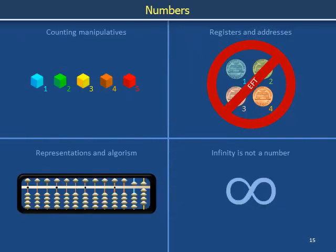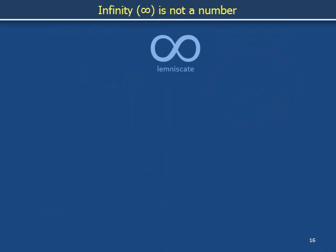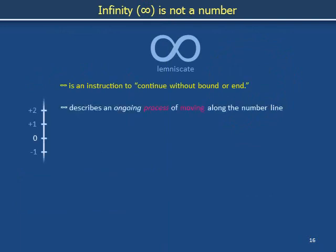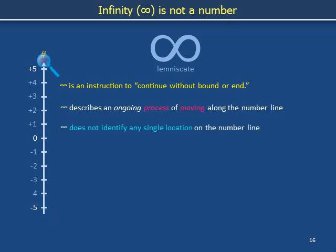We need to finish our review of numbers by reminding ourselves of something that is not a number. The lemniscate is the name of the symbol for infinity. Infinity is not a number. It is an instruction to continue without bound or end. Infinity describes an ongoing process of moving along the number line. Infinity does not identify any single location on the number line. There is no tick mark on the number line called infinity. Infinity is not a number — at least not for this course.